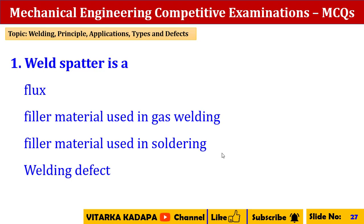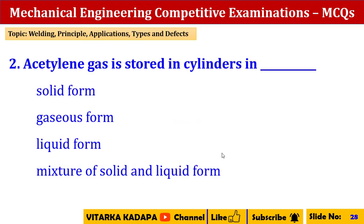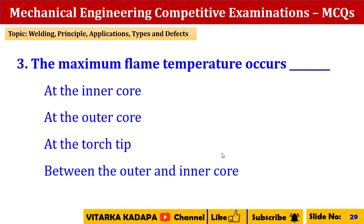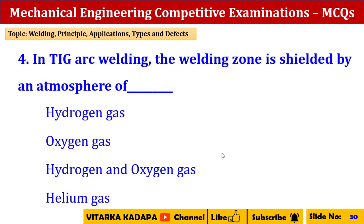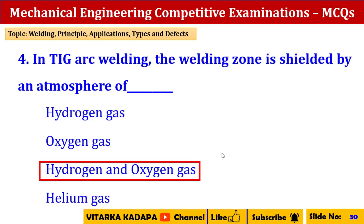Weld spatter is a welding defect. Acetylene gas is stored in cylinders in liquid form. The maximum flame temperature occurs at the inner core of the flame. In TIG arc welding, the welding zone is shielded by an atmosphere of hydrogen and oxygen gases.